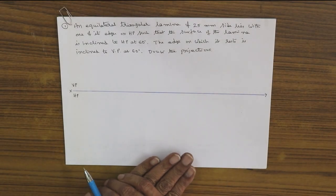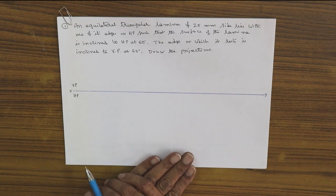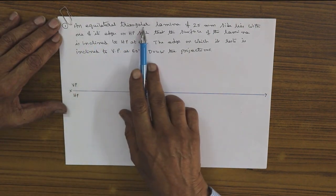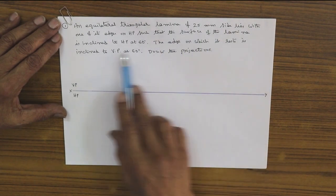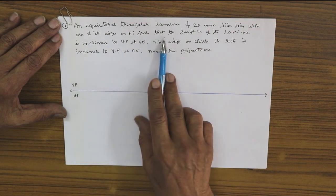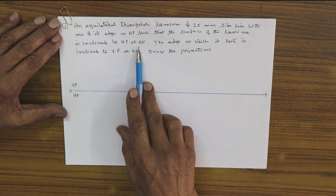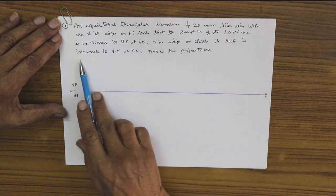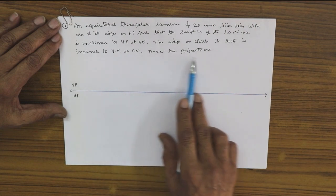We will solve some problems in plane surfaces. The first problem: an equilateral triangular lamina of 25 mm side lies with one of the edges on HP such that the surface of the lamina is inclined to HP at 60 degrees. The edge on which it rests is inclined to VP at 60 degrees. Draw the projections.